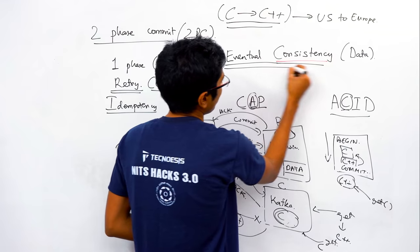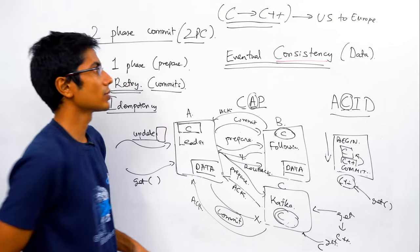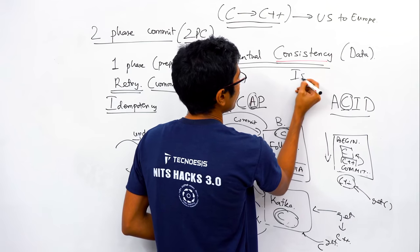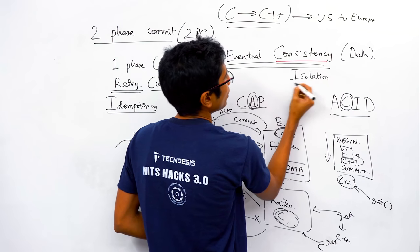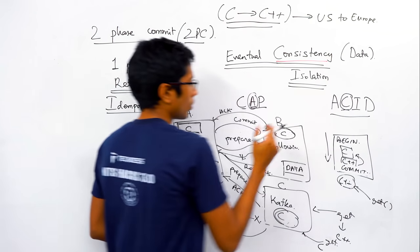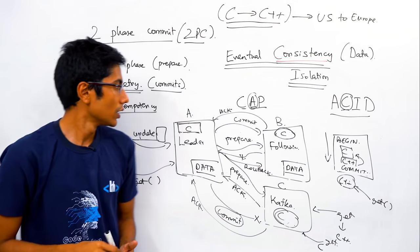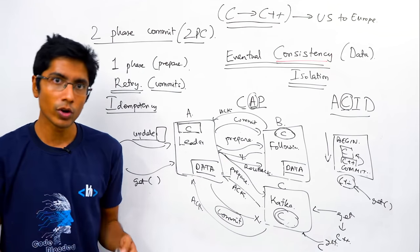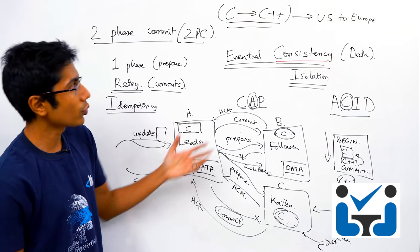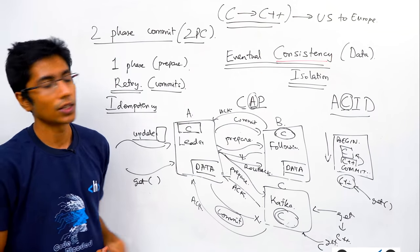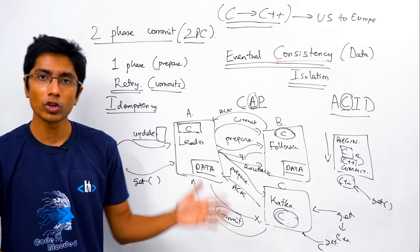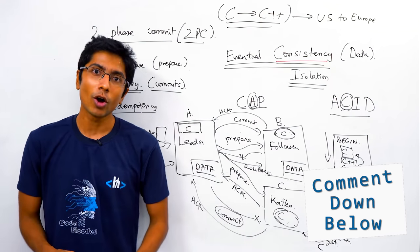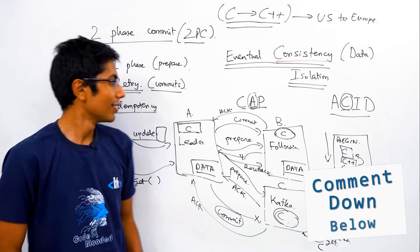Eventual consistency is an extremely important concept in distributed systems, closely tied with isolation guarantees — engineering guarantees for reading and writing data. The next video will be on eventual consistency, so hit the subscribe button for a notification. If you have any doubts or suggestions, leave them in the comments below. See you next time.